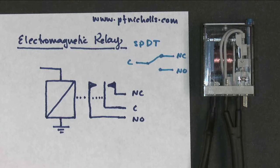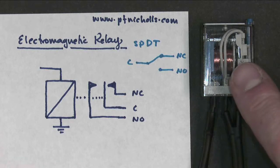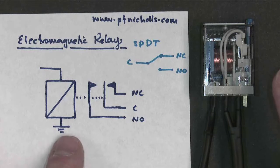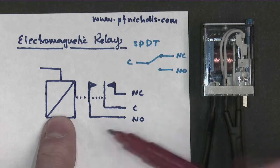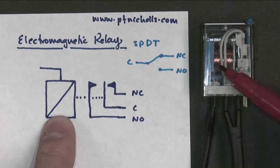This video is about the electromagnetic relay, which is this device here, and this is its circuit symbol. It comprises of a magnet, which is this symbol here, and in reality it's this copper coil.